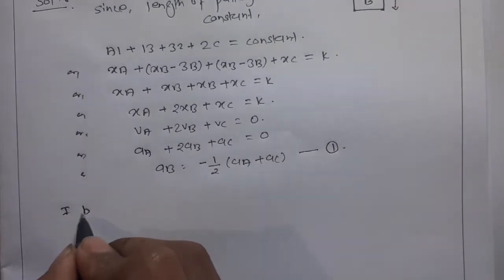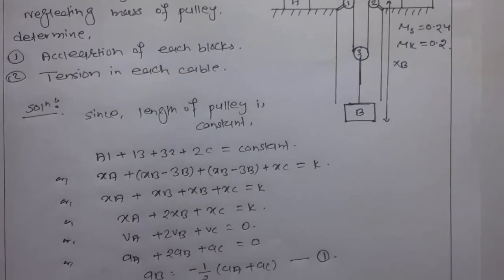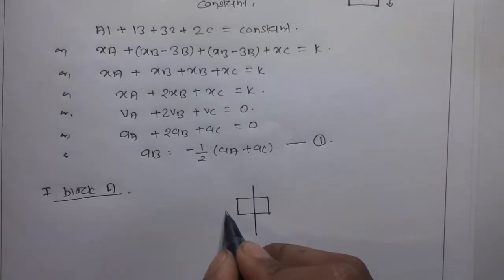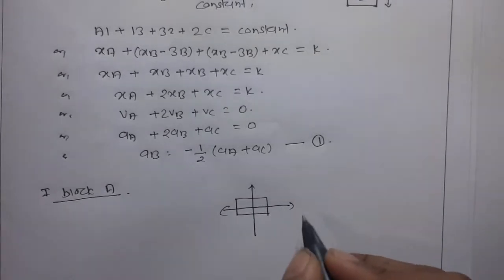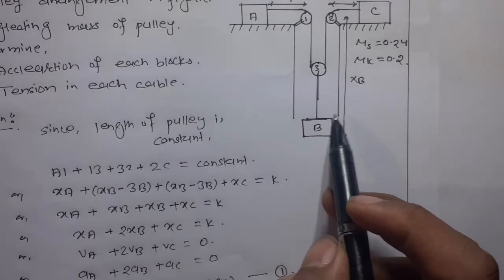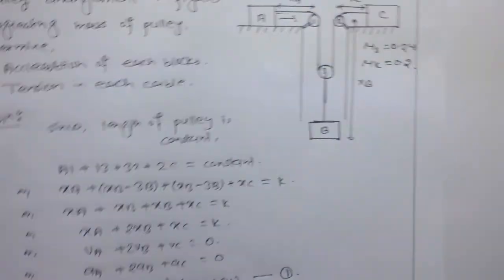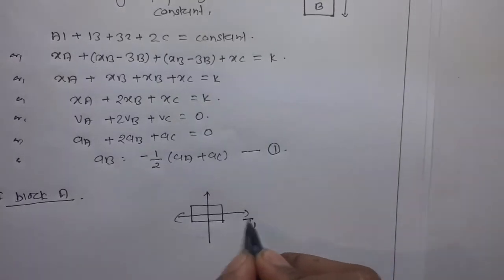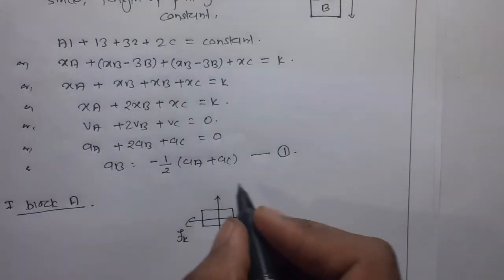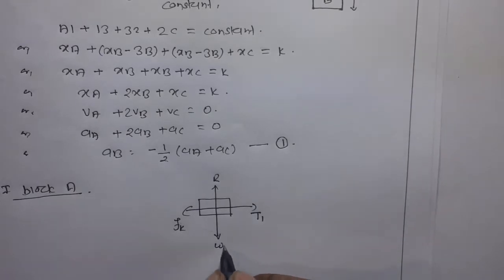For block A: since the weight of block B is greater than the weight of block A, block A moves upward. Tension T1 acts upward, kinetic friction acts in the opposite direction (downward), and the weight of the block acts downward. The normal reaction acts upward.